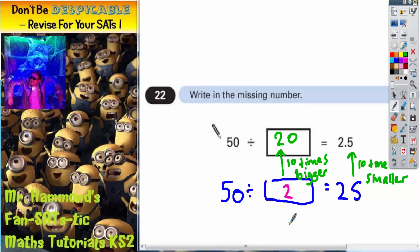And then that will work. So if 50 divided by 2 is 25, to make it 10 times smaller, we will have to split it into 10 times as many pieces. And 10 times as many pieces as 2 is 20, because we're splitting it into 20 pieces to make 2.5.